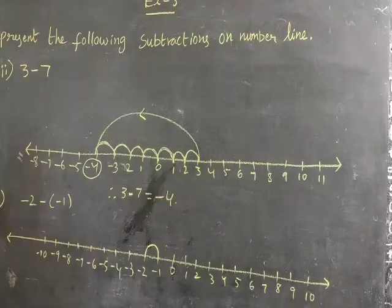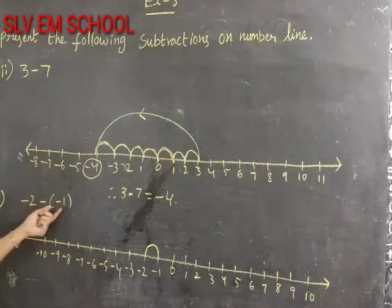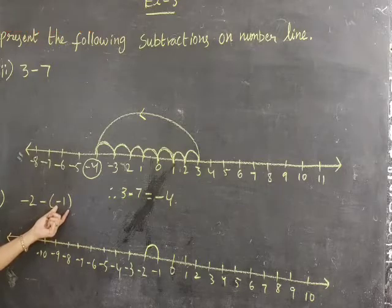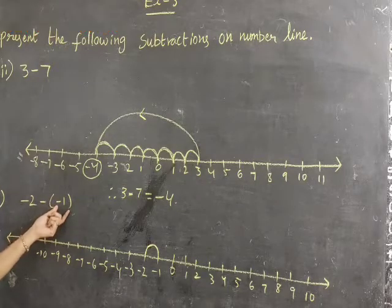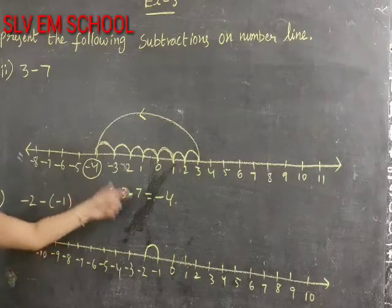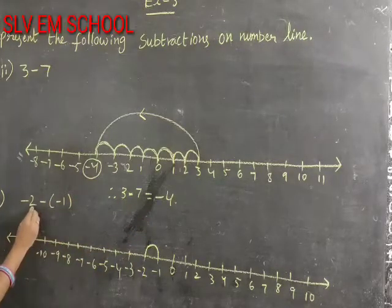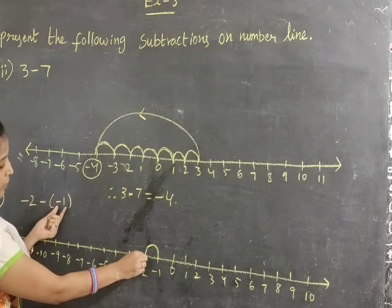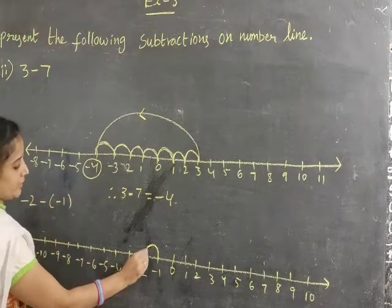Next: minus 2 minus minus 1. Here negative integer, minus 1 is the negative integer. When negative integer is subtracted, we have to move right side of the number line. Here start from minus 2, and minus 1. One step move on the right side.